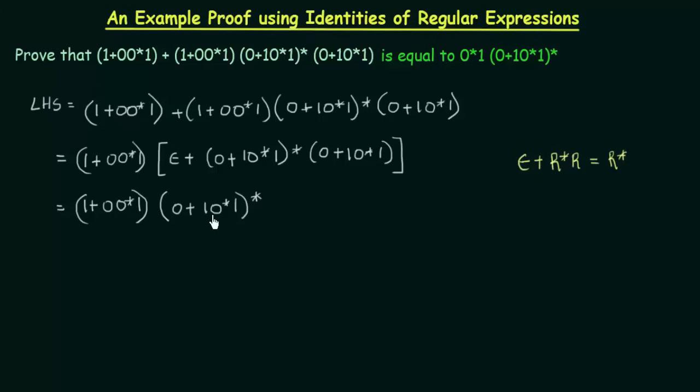Now we are left with these two expressions. What I will do is here I will write epsilon into (1+00*1). Why did I do this?